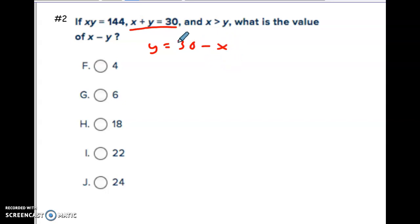And then you can plug that in. So you can take this little statement and plug it in for y into the other equation. So that we end up with x times 30 minus x has to equal 144. All right, and then we can clean up the left-hand side some. So it'd be 30x minus x squared equals 144.